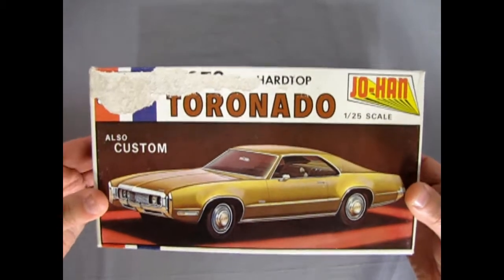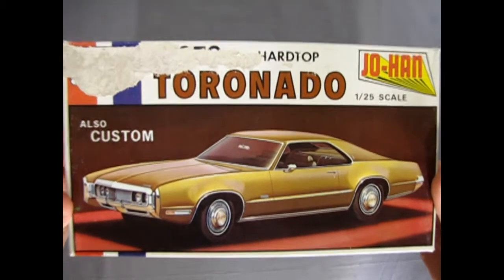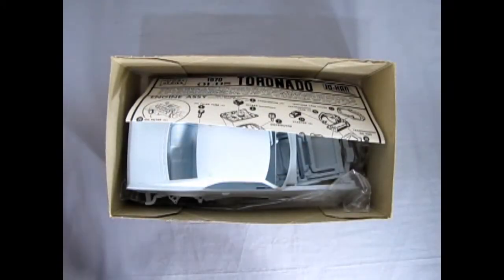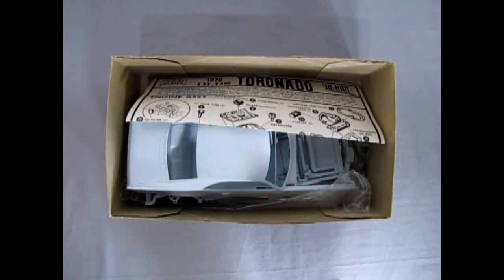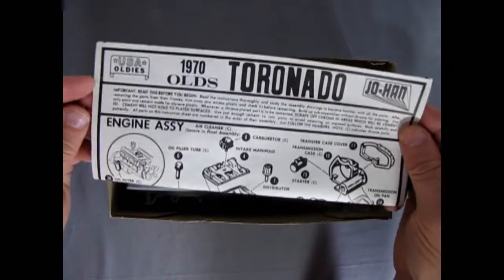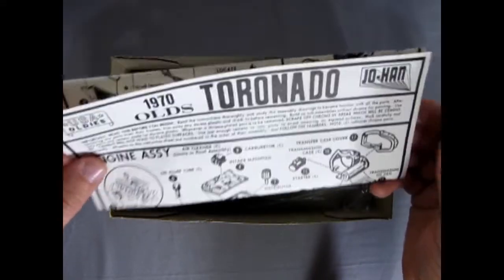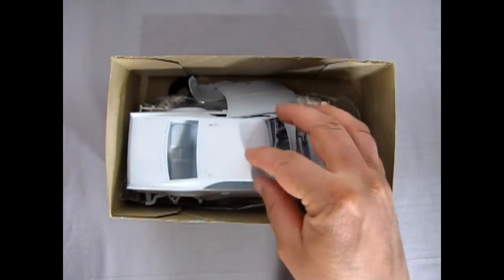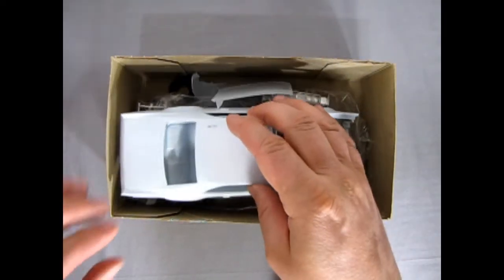So now let's get the skinny on our 1970 Olds, and like I said there may be some components missing out of here. We'll just have to play it by ear. So there's our Johan instruction sheet for this great model. Somebody did sand the roof on this a little bit.